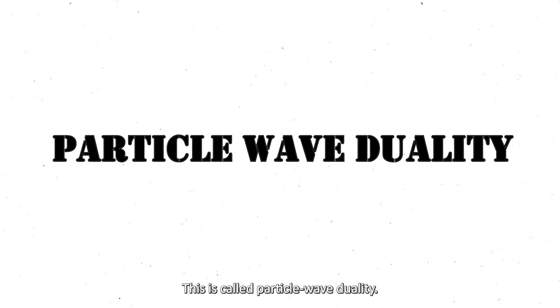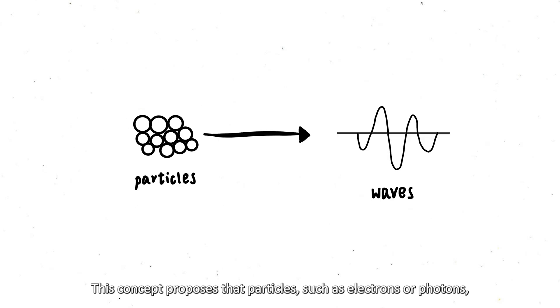But here's where it gets truly fascinating. In quantum mechanics, particles can behave like waves too. This is called particle-wave duality. This concept proposes that particles, such as electrons or photons, can exhibit both particle-like and wave-like properties, depending on how they are observed or measured.